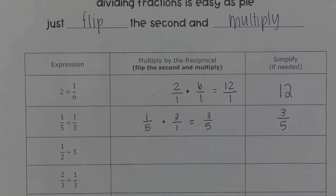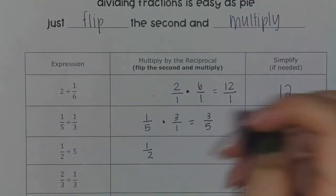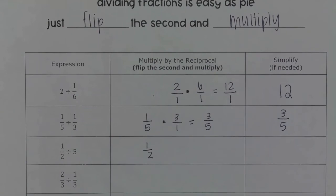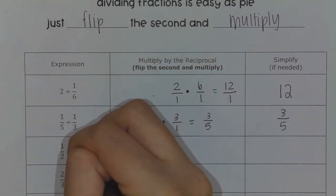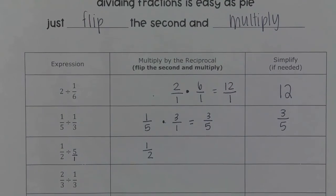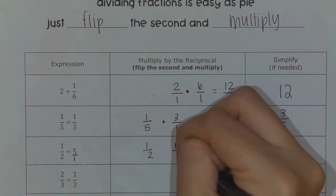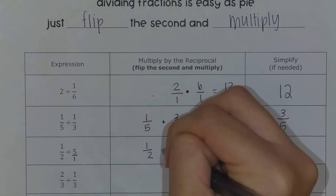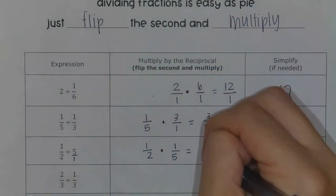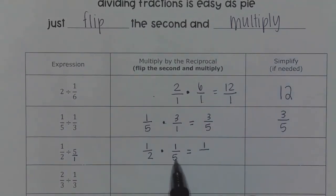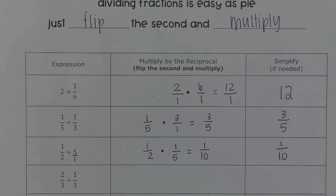The next one is one-half divided by five. I leave that first fraction alone and flip the second fraction to find its reciprocal. Five is a whole number — it secretly has a denominator of one — so the reciprocal of five would be one-fifth. I change the division to multiplication: one times one gives me one, two times five gives me ten. So I get one-tenth.